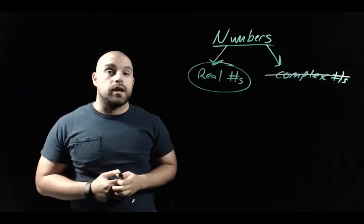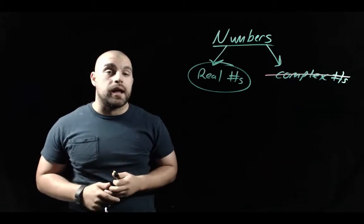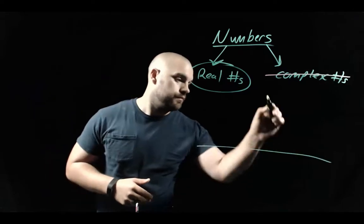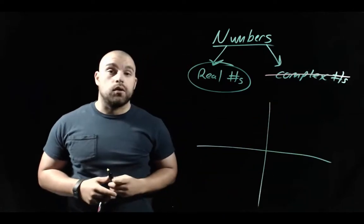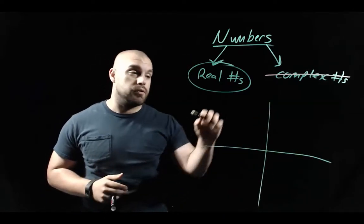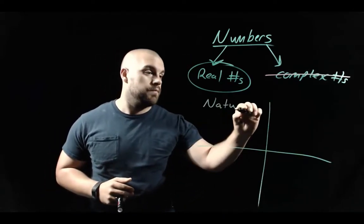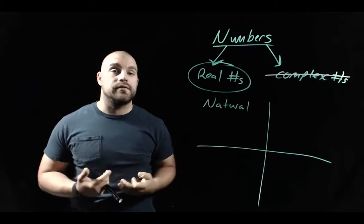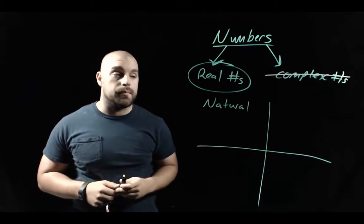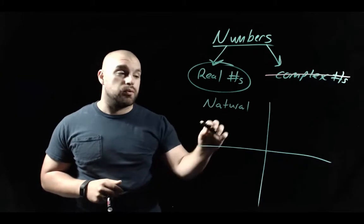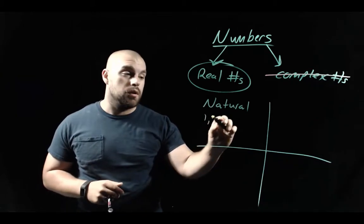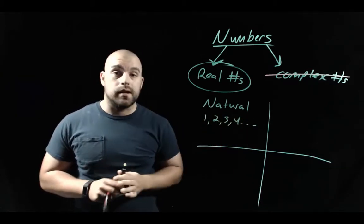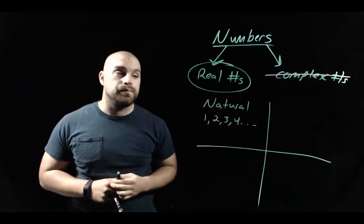Talking about real numbers, there are four different categories they can be broken down into. The first category is natural numbers, also called the counting numbers. Natural numbers are one, two, three, four, and so on, counting up as high as you can go.